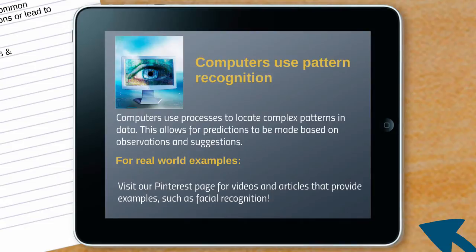Computers use pattern recognition to identify patterns in numbers, texts and images. This kind of information processing is used in areas such as forensics. For example, in fingerprint or photo identification.